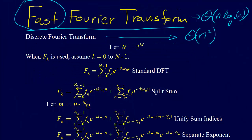Now we can look at the Fast Fourier Transform algorithm. We start with the regular Discrete Fourier Transform, and throughout this derivation we need to assume that N equals 2 to the M — so we have a power-of-2 number of input points. That's not really a restrictive assumption, because in real applications you can usually sample at a certain number of points. We also note that whenever F sub k is used, k goes from 0 to N minus 1. So getting started, we have the standard Discrete Fourier Transform: a sum from N equals 0 to N minus 1 of F sub N times e to the minus k omega-naught N.